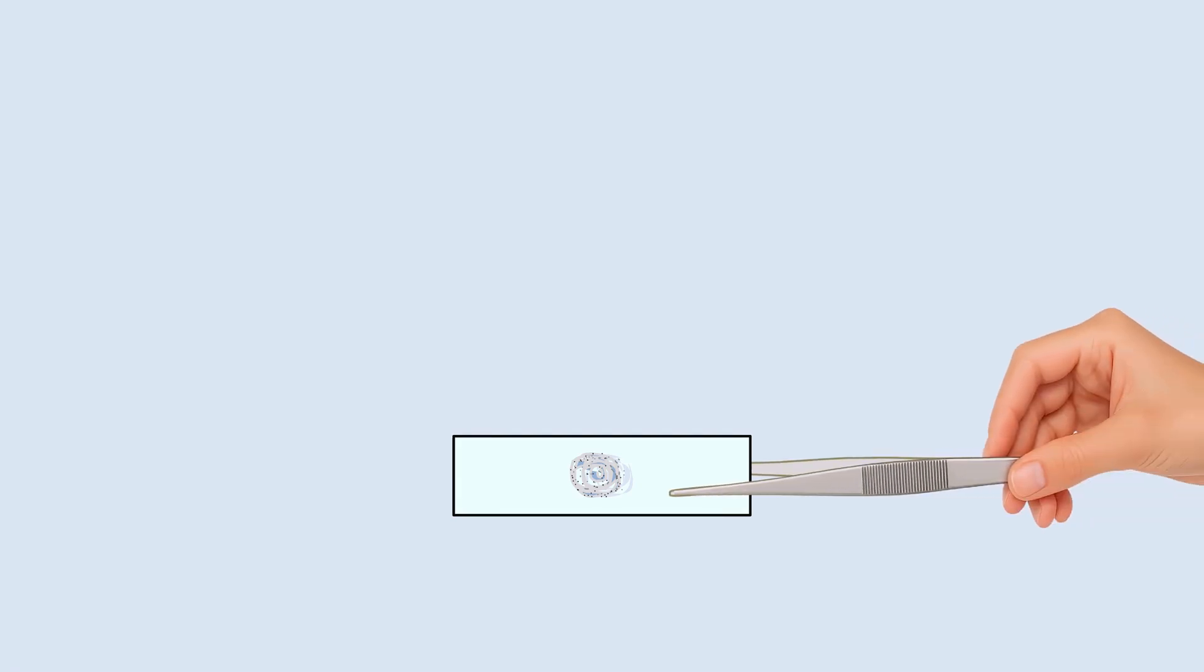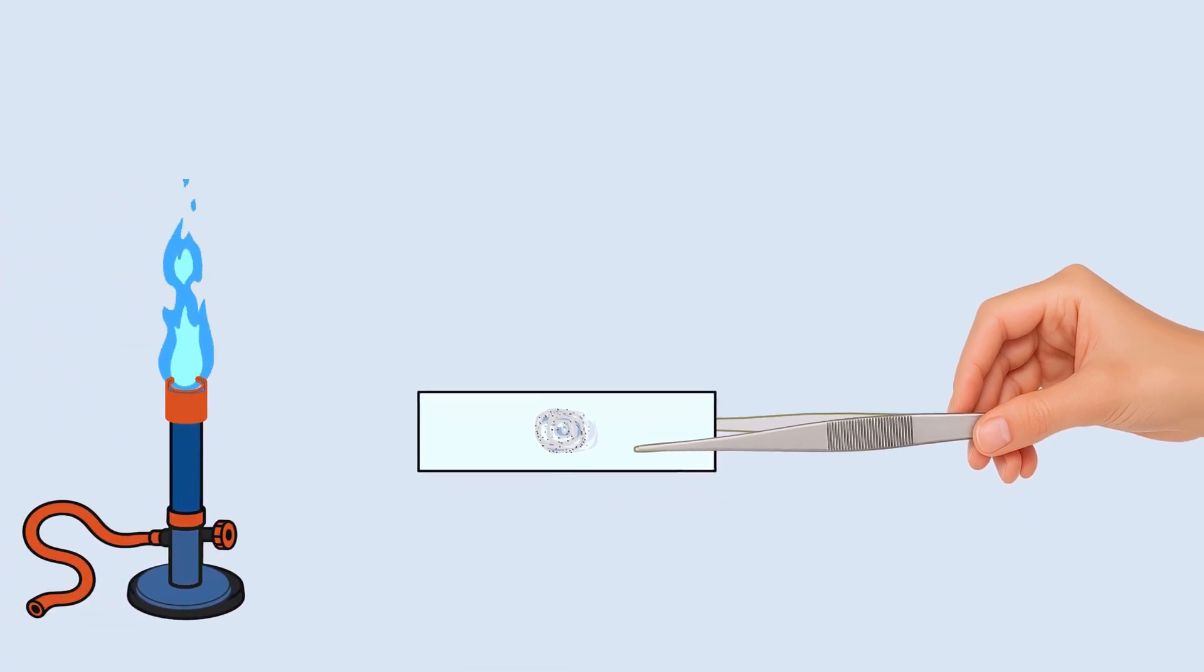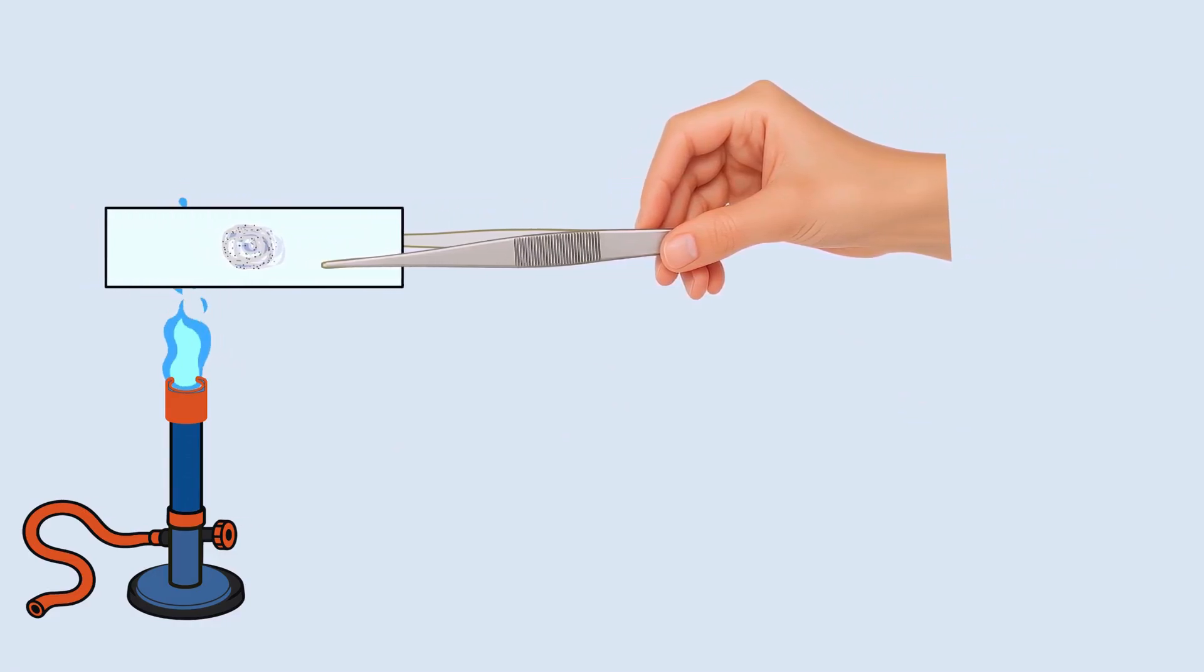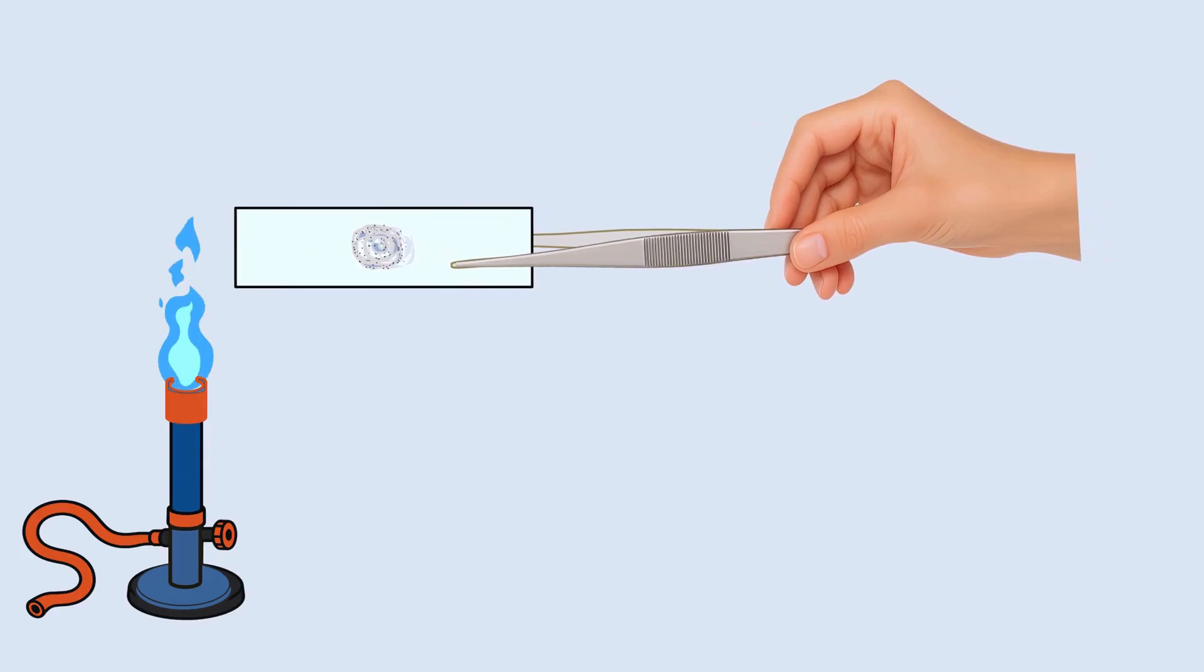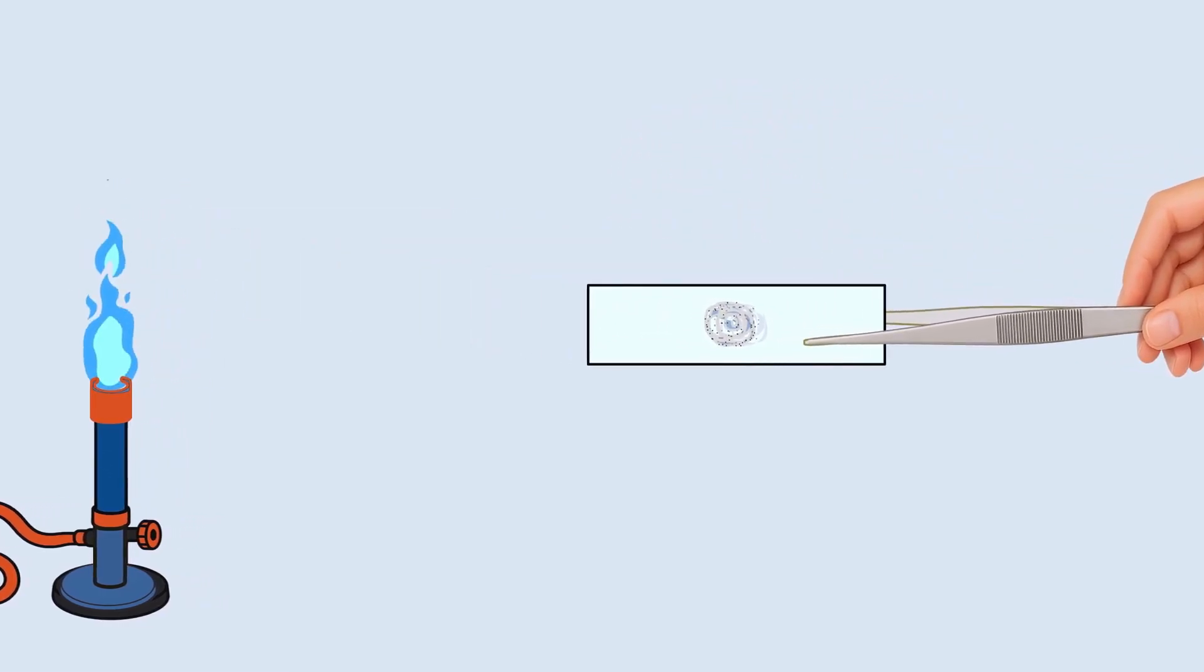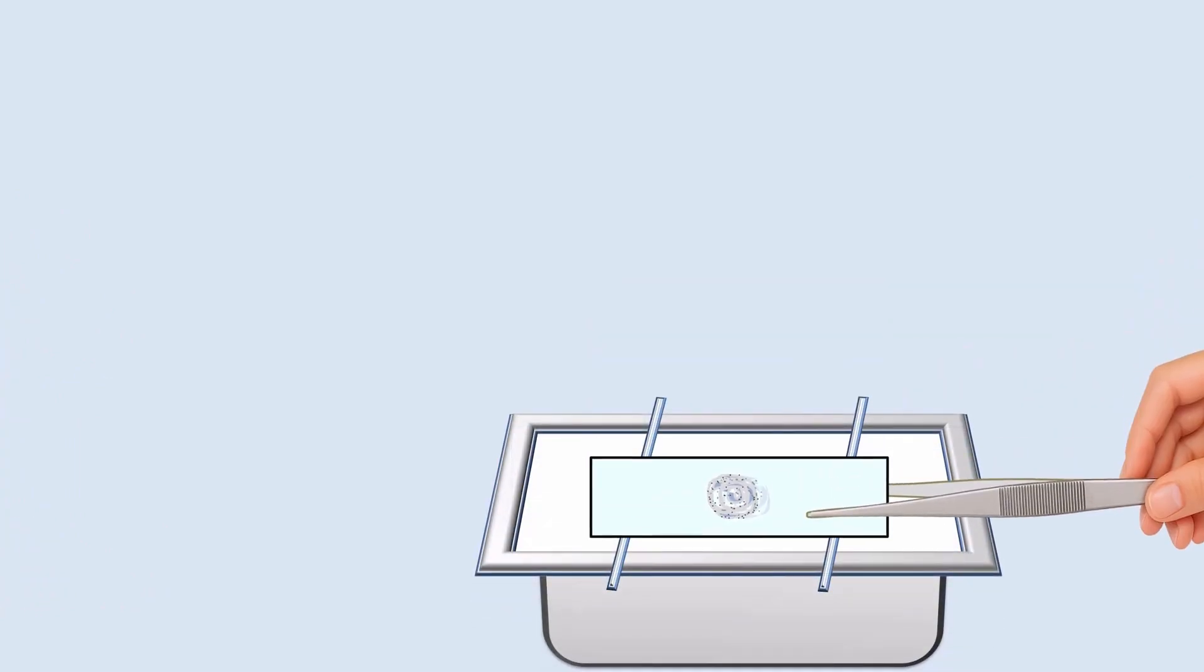Hold the slide with forceps and gently pass it through the Bunsen burner flame two to three times to heat fix the smear. Be careful and do not overheat the slide. Now the smear is fixed. Place the slide on the staining tray.